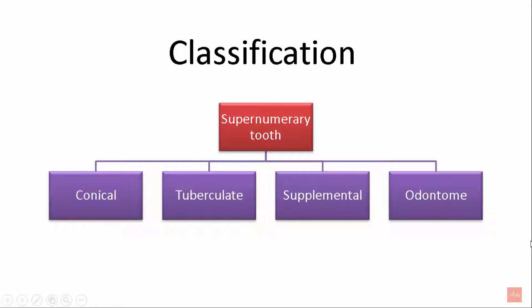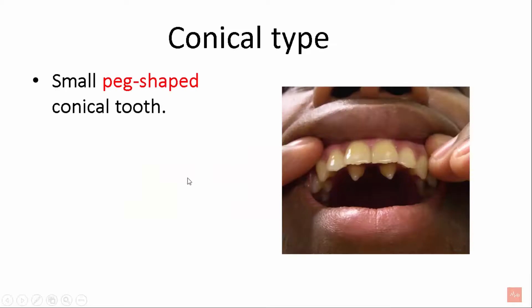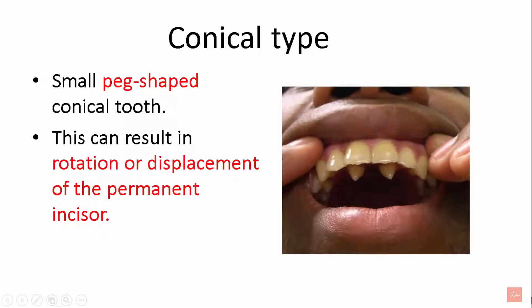Let's start with the conical type. These are small peg-shaped conical teeth. As you can see in this picture, this is the conical type. This can result in rotation or displacement of the permanent incisor. It rarely delays eruption.